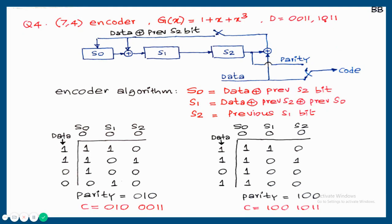Next, data 1, 0, 1, 1 is entered rightmost-bit-first as 1, 1, 0, 1. Applying the algorithm, we get parity bits 1, 0, 0. After the 4 data bits are transmitted, the switching position changes and these 3 parity bits are transmitted through the output path. So the final output code is 1, 0, 0, 1, 0, 1, 1.